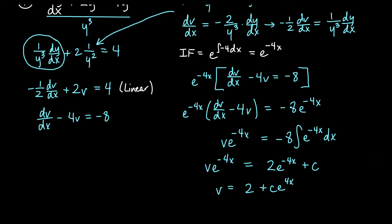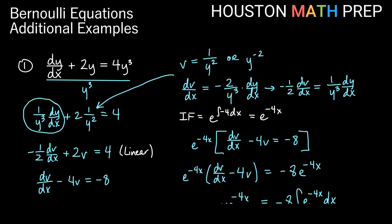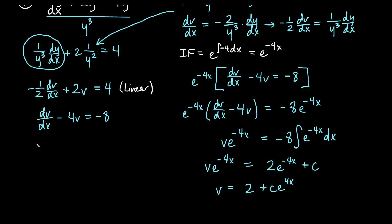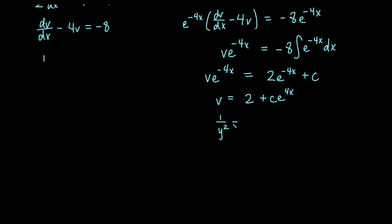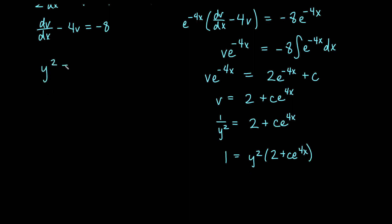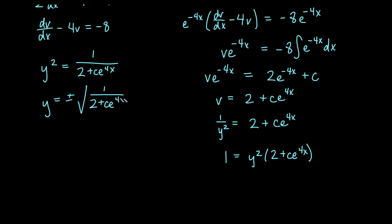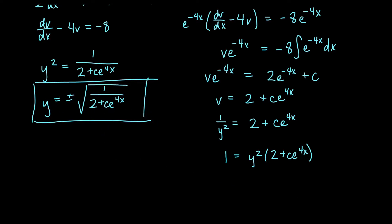Remember that v was our substitution: v equals 1 over y squared. Replacing v, we get 1 over y squared equals 2 plus c e to the 4x. Multiplying both sides by y squared gives 1 equals y squared times (2 plus c e to the 4x). Dividing gives y squared equals 1 over (2 plus c e to the 4x). Taking the square root, y equals plus or minus the square root of 1 over (2 plus c e to the 4x). If the initial condition gives positive y, use the positive root; if negative, use the negative root.